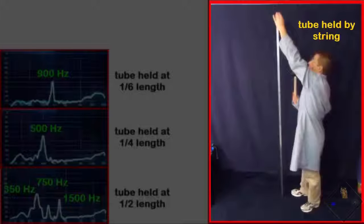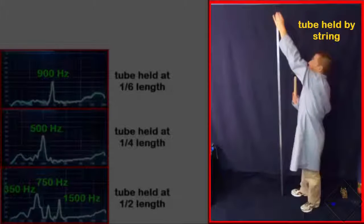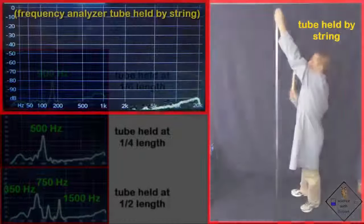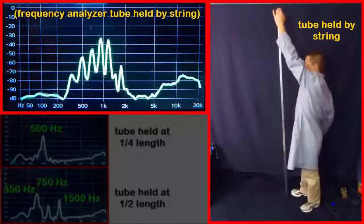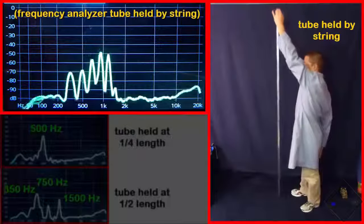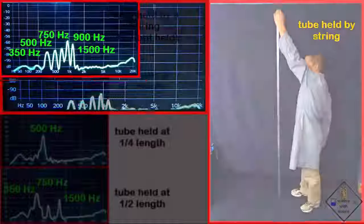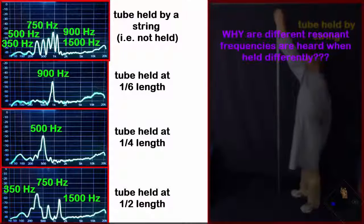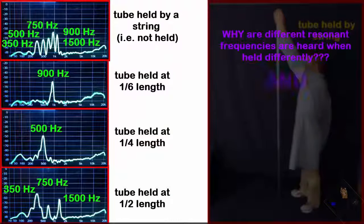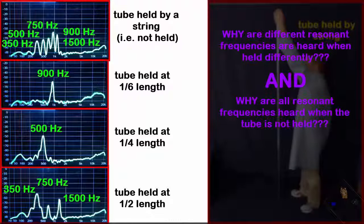Let's try it. Dr. Smith is not touching the tube. Instead, he is holding the tube up with a string. Now when the tube is struck, all resonant frequencies are heard. How did that happen? The reason why different resonant frequencies are heard when the tube is held at different positions, and why all resonant frequencies are heard when the tube is not touched, is something scientists call standing waves.